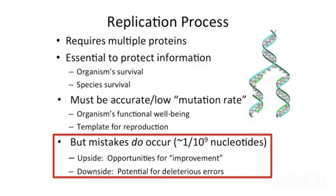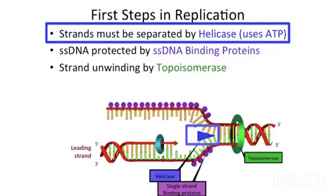But on the downside, there is also the potential for deleterious errors. Sometimes a single base pair change might be catastrophic. So, mutations do occur, but any given mutation might have an upside or a downside. Let's look at the replication process itself.